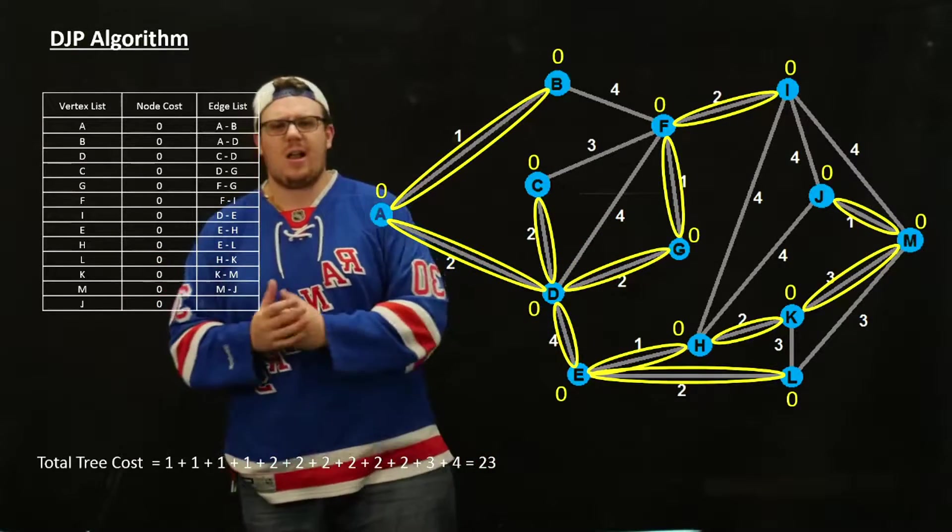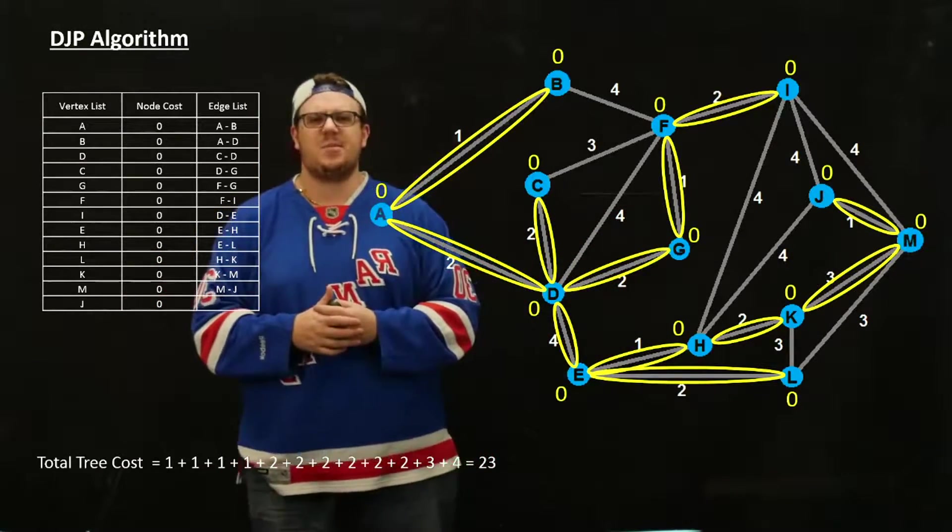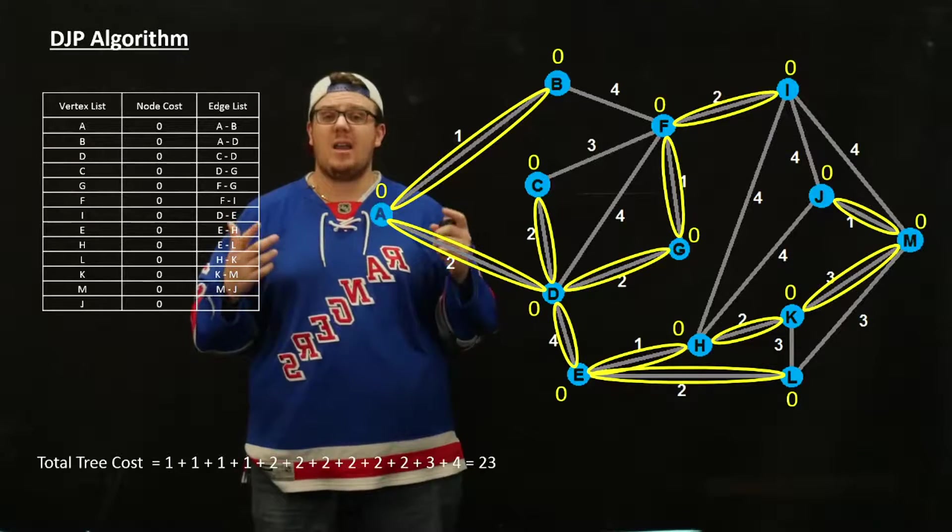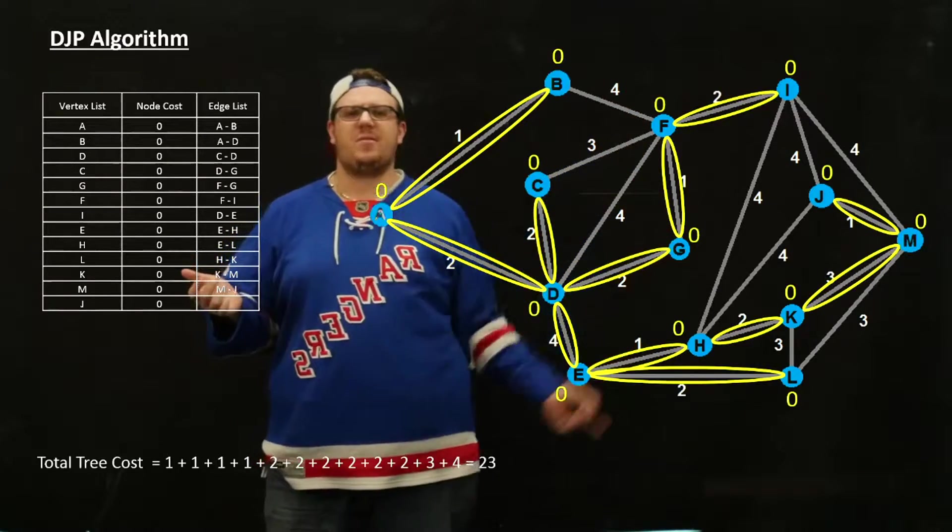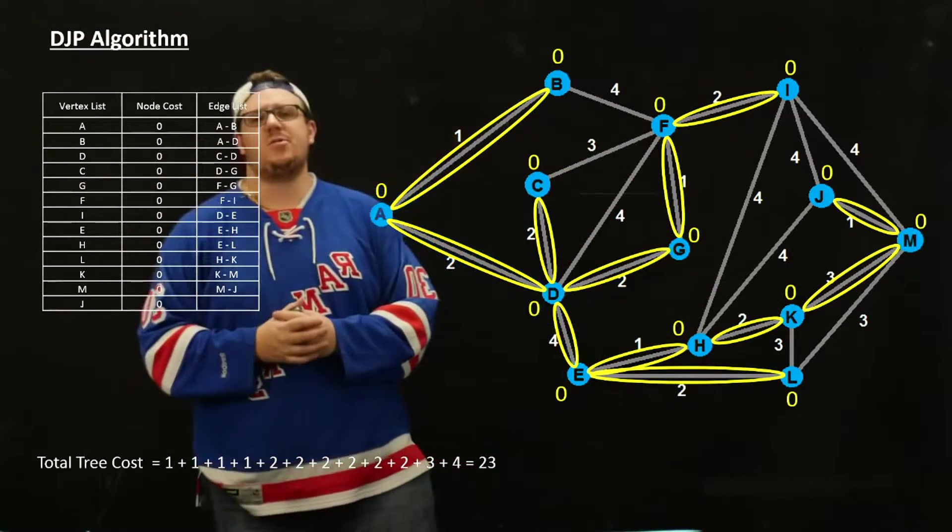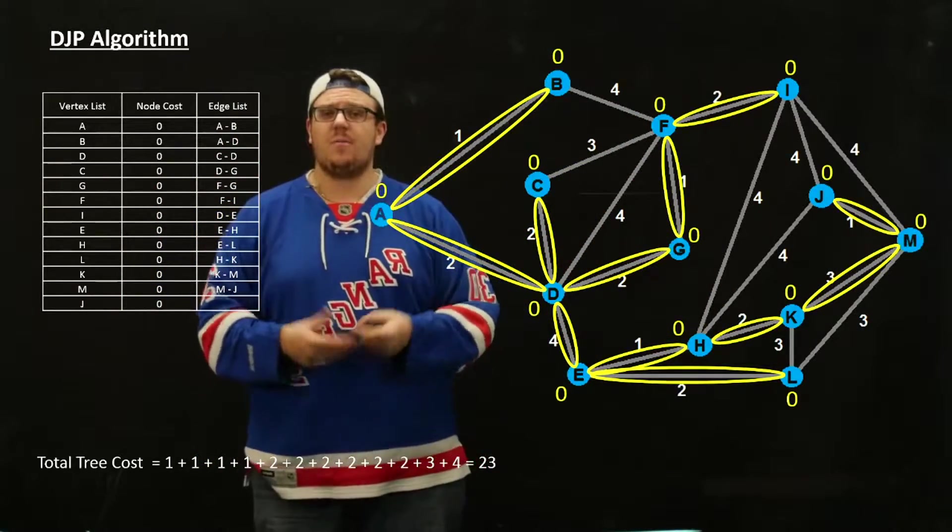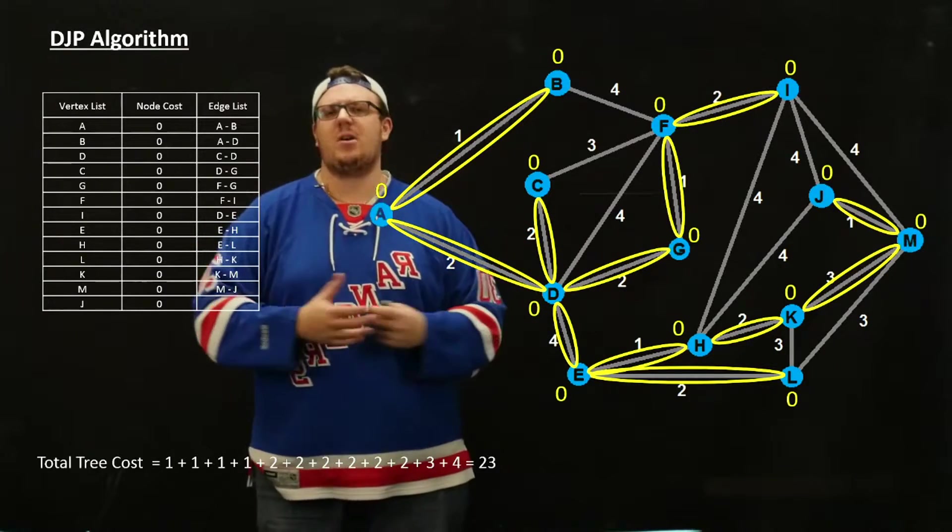You could do this by hand, and for smaller networks, that's pretty feasible. And obviously, the starting point we pick shouldn't matter. We should be able to pick a different starting point and end up with the same tree, or not with the same tree, with a tree of the same cost.